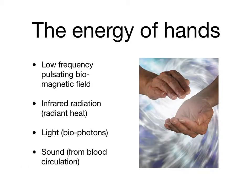This indicates that we may all have an ability to heal different types of tissue from the ki or biomagnetic field from our hands. The biomagnetic field is not the only type of energy from our hands — we also have infrared radiation, which is radiant heat, giving the feeling of warmth when we pass our hands over a receiver's body. There are also bio-photons — light transmitted from living systems — and sound created by our blood circulation.